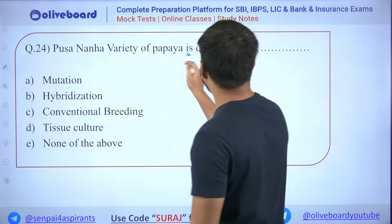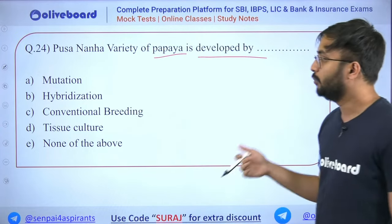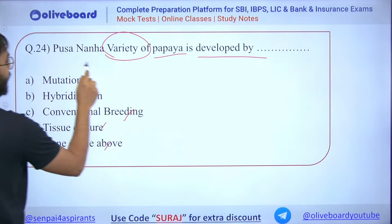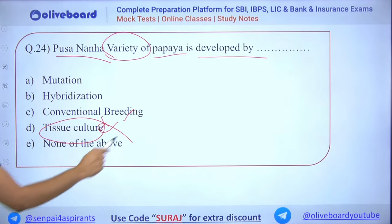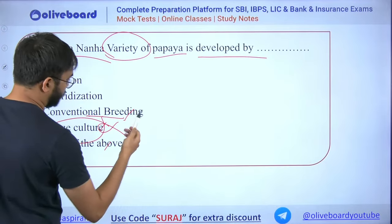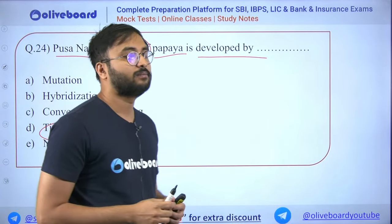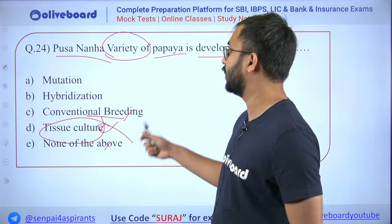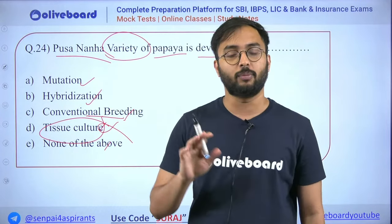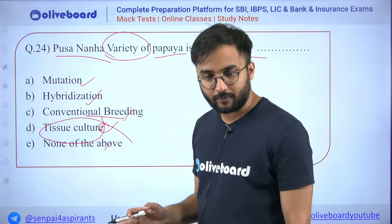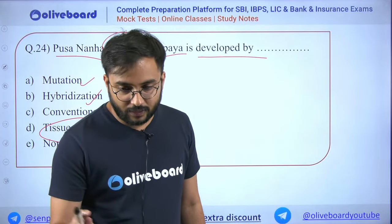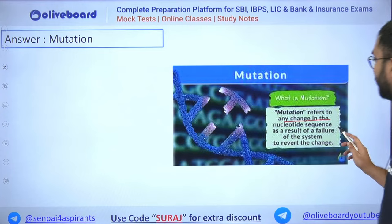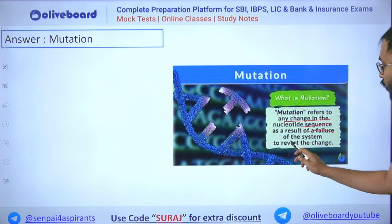Next: Pusa Nanne variety of papaya is developed by — mutation, hybridization, conventional breeding, tissue culture, or none? It's a hybrid variety so eliminate tissue culture. For plants, conventional breeding is less common. Either hybridization or mutation would be the answer. The correct answer is mutation — any change in nucleotide sequence as a result of the system failing to revert the change.